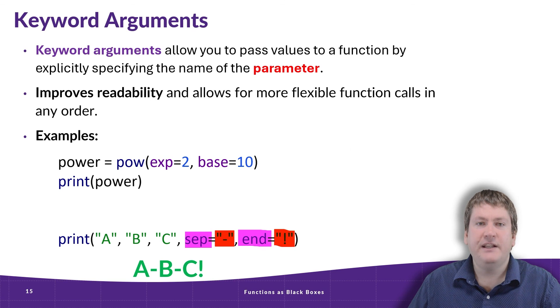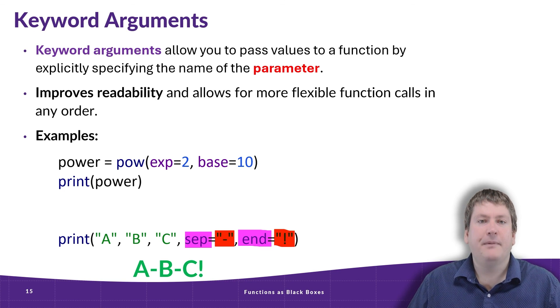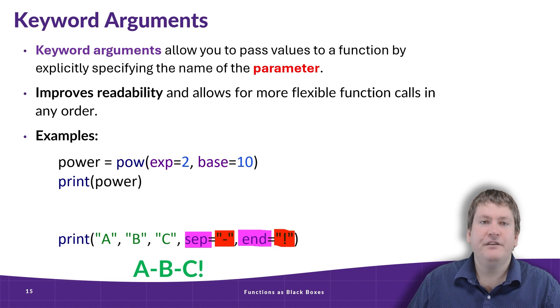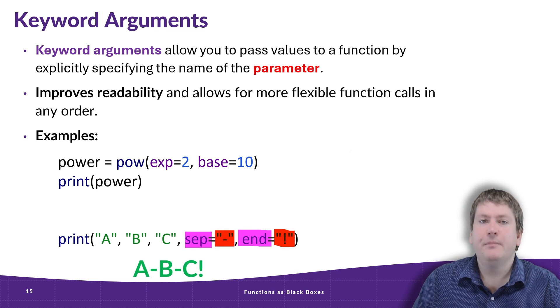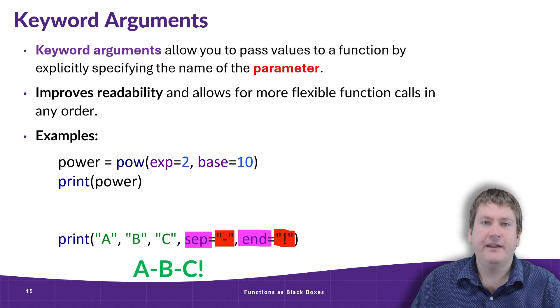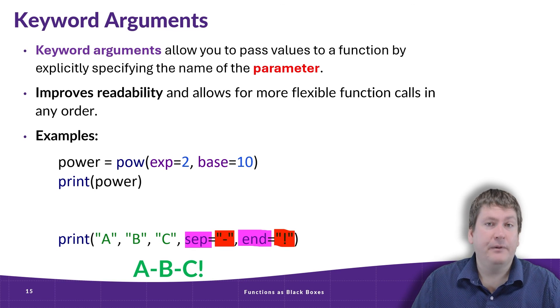So in this case, we get the output of A dash B dash C. Those dashes are coming from that separator keyword argument. And at the end, instead of a line break, we get that exclamation mark, because we changed the default line break in the end parameter to an exclamation mark character.